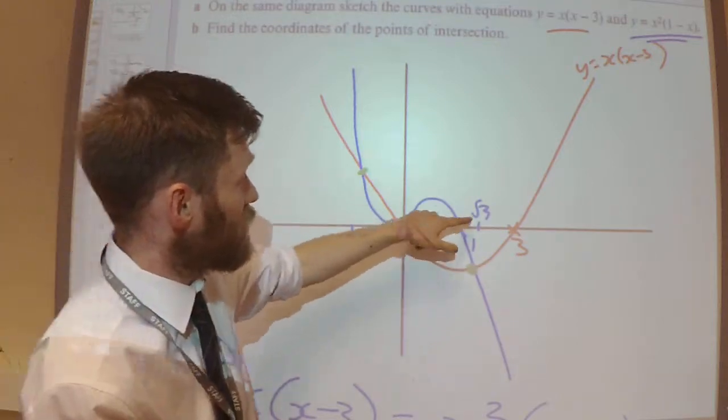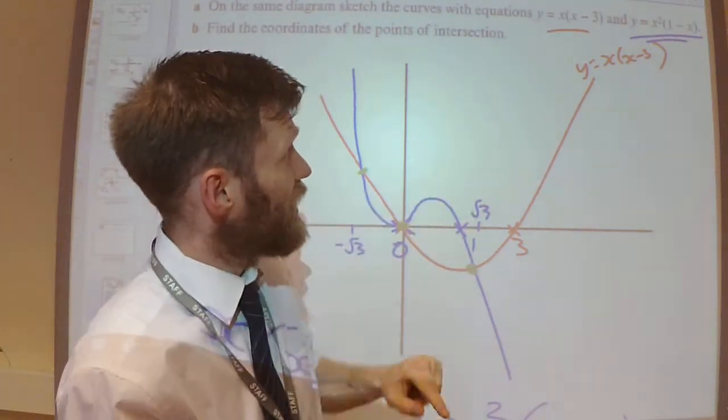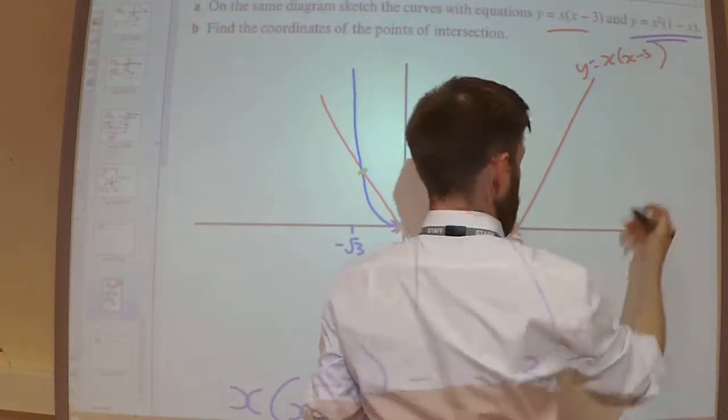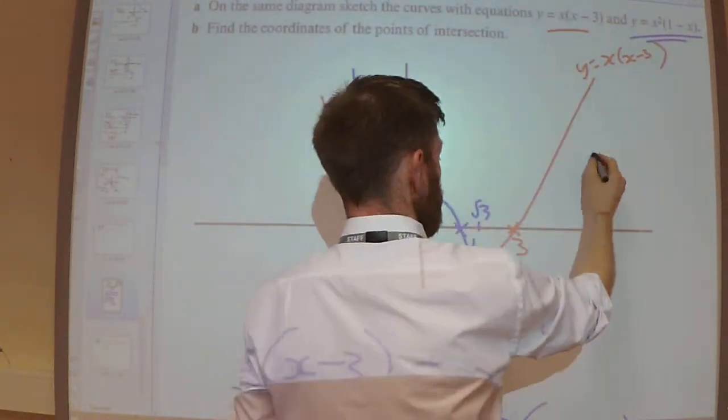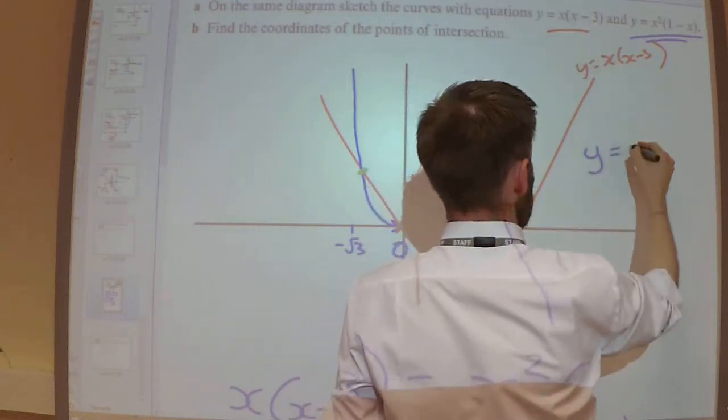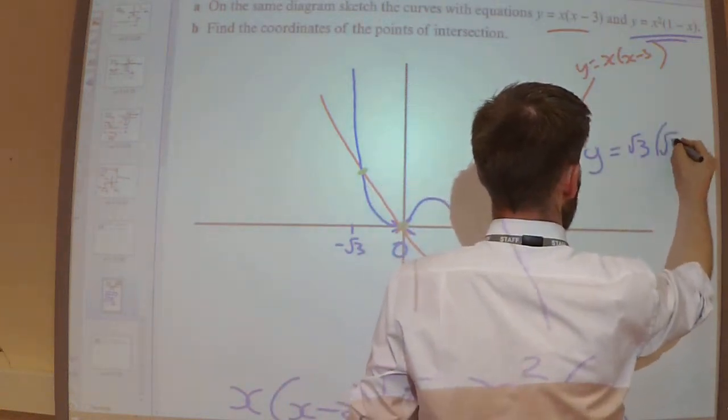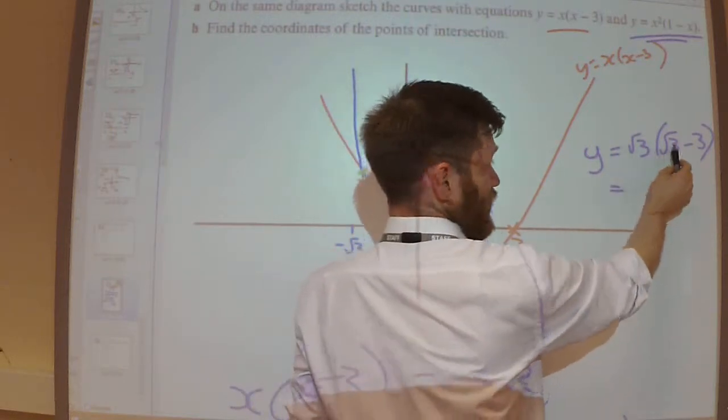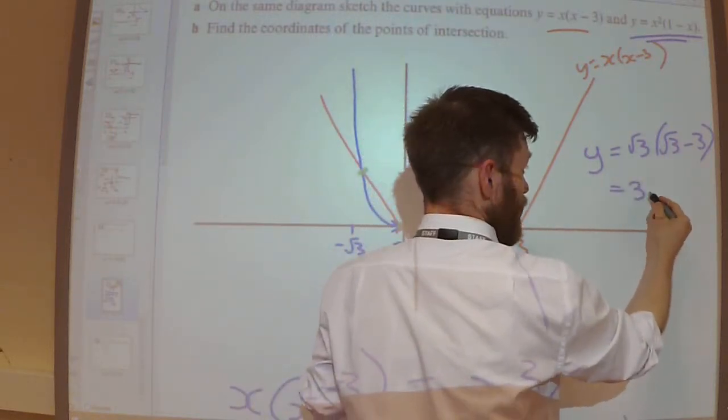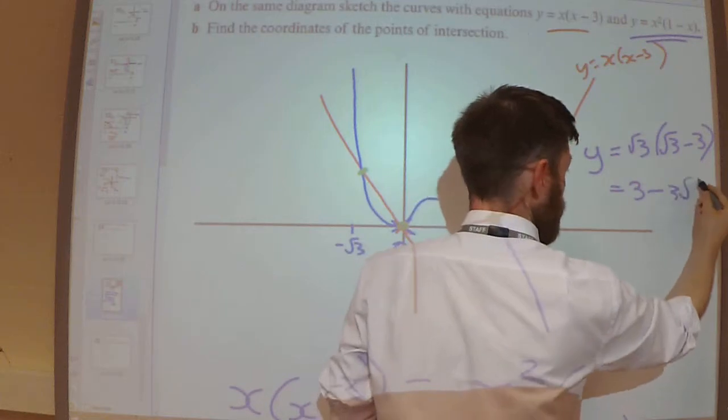If I substitute √3 into either one of these, it doesn't matter which one, I'm going to substitute it into the first one. So I will get y = √3(√3-3). √3 times √3 is 3, and 3 times √3.